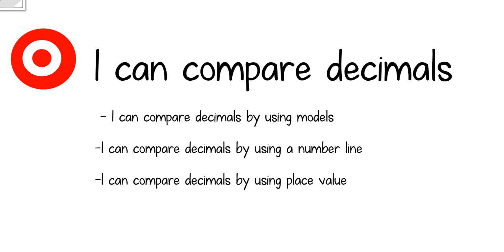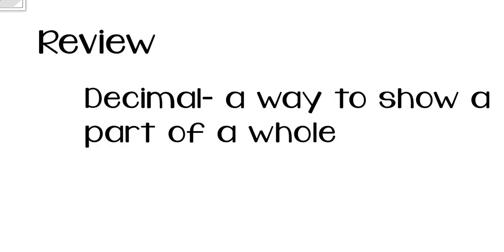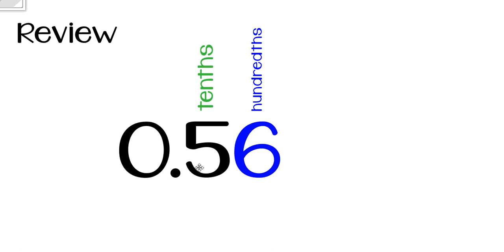Today we're going to talk about three different strategies you can use to compare decimals. First, let's review: a decimal is another way you can show a part of a whole. Here's an example — you might be tempted to read this as 0.56, but remember that each digit has a place. After the decimal point, to the right of the ones place, the first place is called the tenths. So in this number we have 5 tenths and 6 hundredths, and it's read as zero and 56 hundredths.